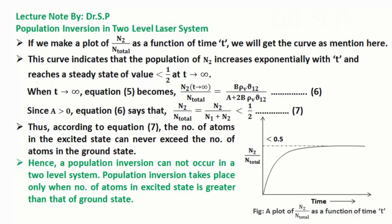Hence, a population inversion cannot occur in a two-level system. Population inversion takes place only when number of atoms in excited state is greater than that of ground state.